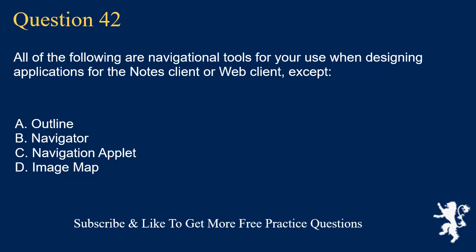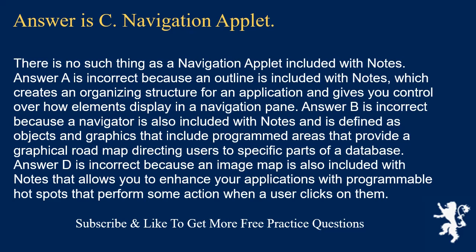Question 42. All of the following are navigational tools for designing applications for the Notes client or web client, except: Outline. Navigator. Navigation applet. Image map. Answer is C: Navigation applet. There is no such thing as a navigation applet included with Notes. Answer A is incorrect because an outline creates an organizing structure for an application and gives you control over how elements display in a navigation pane. Answer B is incorrect because a navigator includes objects and graphics with programmed areas providing a graphical roadmap directing users to specific parts of a database. Answer D is incorrect because an image map allows you to enhance applications with programmable hotspots that perform actions when clicked.